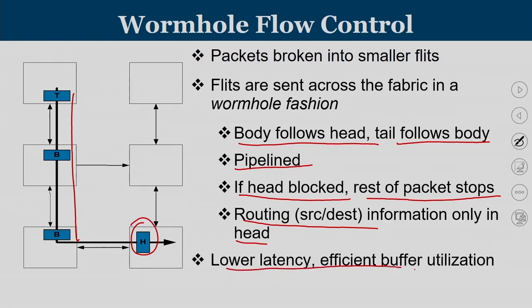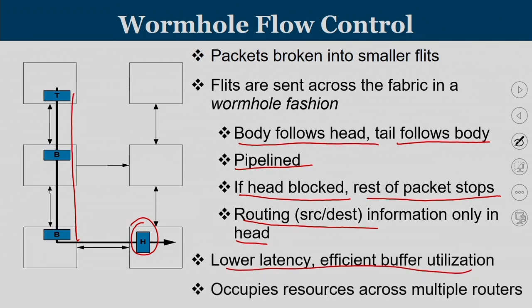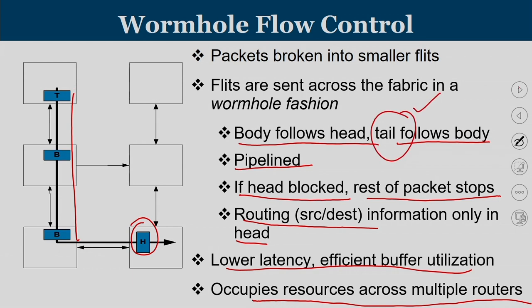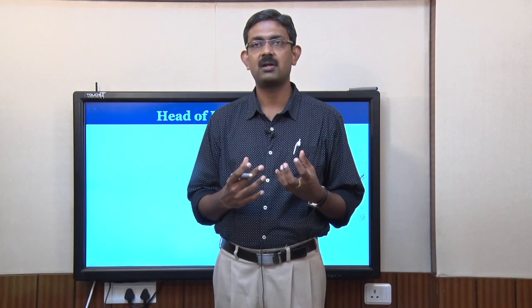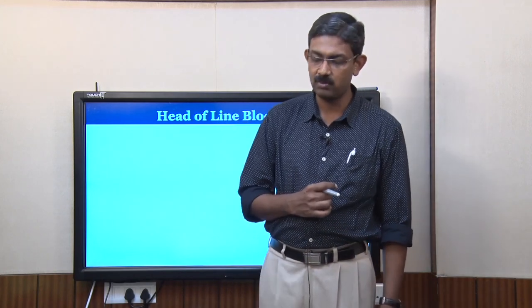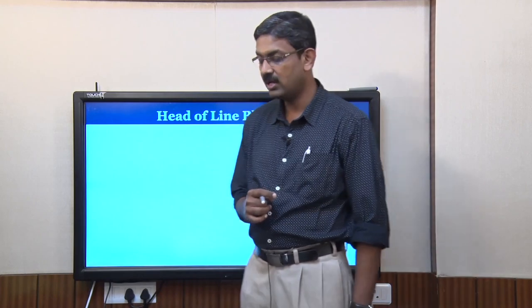In wormhole switching, a packet occupies resources across multiple routers. The tail flit's duty is to deallocate the resources that have been reserved. We have seen that store-and-forward routing has its own problems, with a slight improvement in virtual cut-through routing, and the third approach practiced in modern network on chips is wormhole routing. Now let us understand an important problem with wormhole routing called head-of-line blocking.